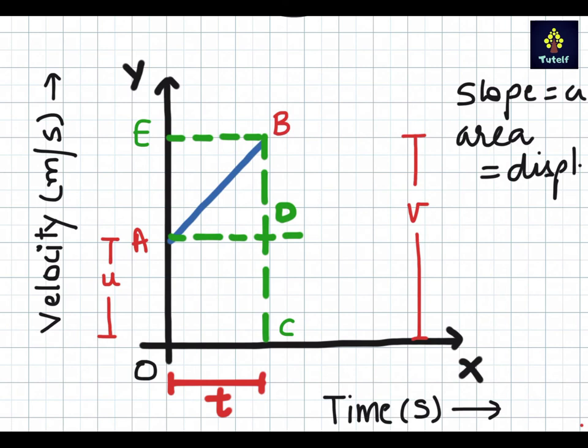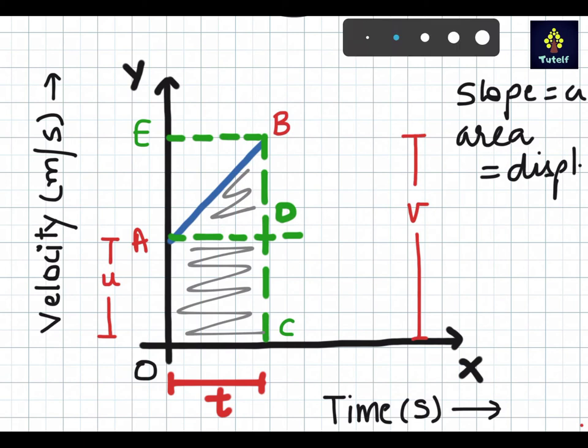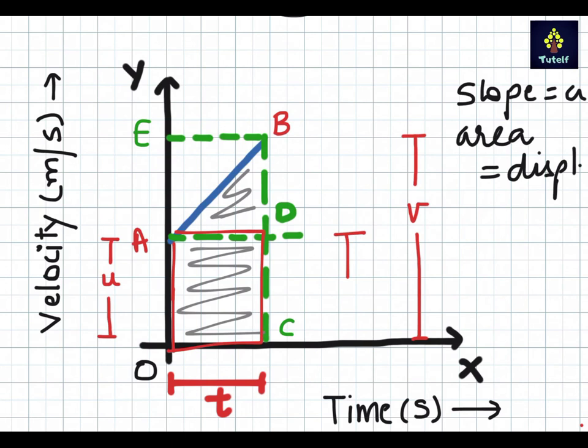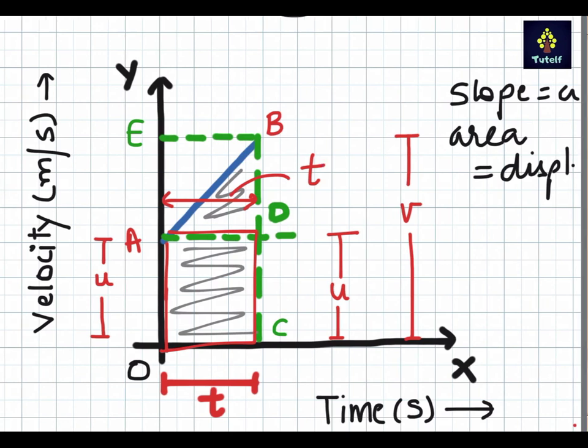Now if I need to find the area under the graph, what do I need to do? Simple thing. I need to find the area of this triangle as well as this rectangle. Since ADCO is a rectangle, DC is also U, and similarly AD is T. We will continue with the derivation part for the position-time relation or the second equation of motion.